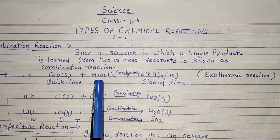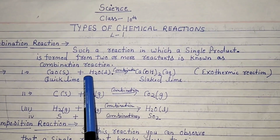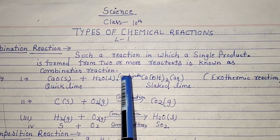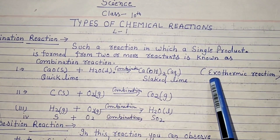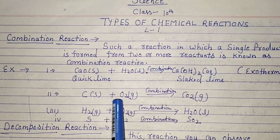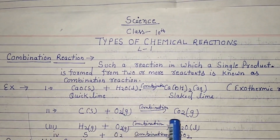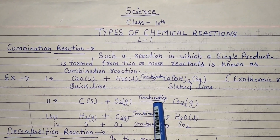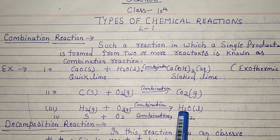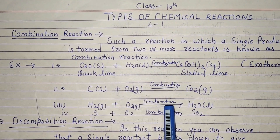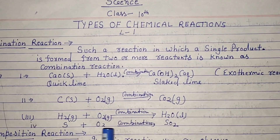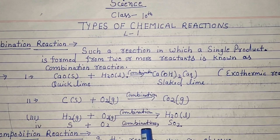After mixing quicklime and water, heat and energy are released — this is an exothermic reaction. Next example: carbon plus oxygen gives a single product. Similarly, hydrogen plus oxygen — two reactants combine to form a single product, that is a combination reaction. Next example: sulfur plus oxygen — two reactants combine to form a single product, that is also a combination reaction.